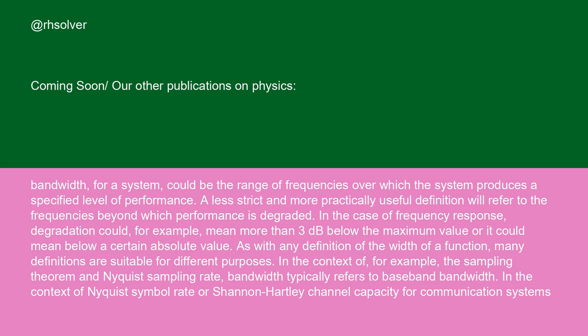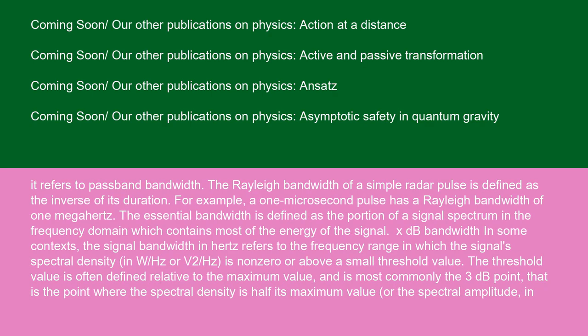In the context of, for example, the sampling theorem and Nyquist sampling rate, bandwidth typically refers to baseband bandwidth. In the context of Nyquist symbol rate or Shannon-Hartley channel capacity for communication systems, it refers to passband bandwidth. The Rayleigh bandwidth of a simple radar pulse is defined as the inverse of its duration. For example, a 1 microsecond pulse has a Rayleigh bandwidth of 1 MHz. The essential bandwidth is defined as the portion of a signal spectrum in the frequency domain which contains most of the energy of the signal.